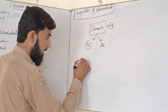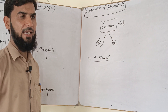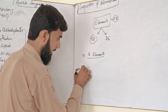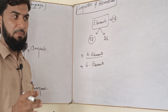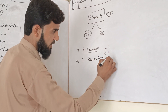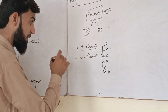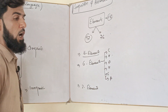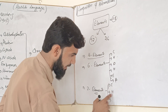Of those 180 elements, 16 are essential biological elements. The 6 major elements are carbon, hydrogen, oxygen, nitrogen, sulfur, and phosphorus. The top three — carbon, hydrogen, and oxygen — make up 95% of the body.